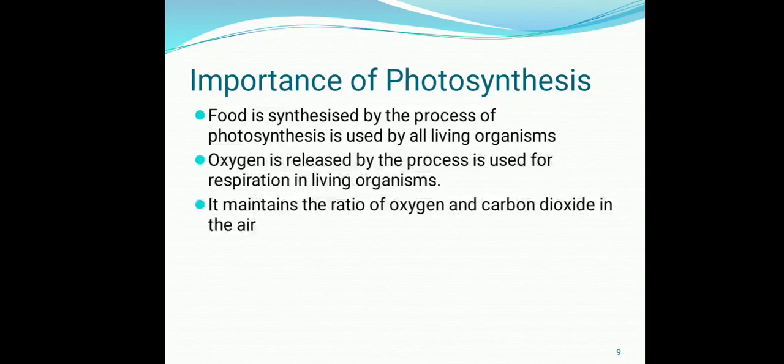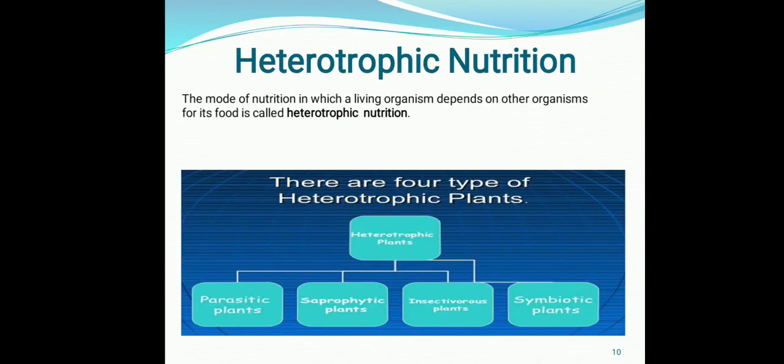Now we come to the second mode of nutrition in plants, which is known as heterotrophic nutrition. It is the mode of nutrition in which a living organism depends on other organisms for its food. Those organisms are known as heterotrophs. In plants, there are basically four types of heterotrophic plants: parasitic plants, saprophytic plants, insectivorous plants, and symbiotic plants.